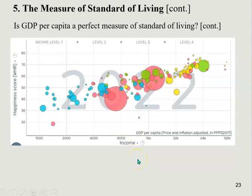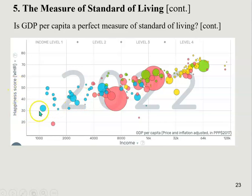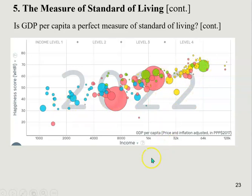There is one more Gapminder chart to share — the relationship between income measured by GDP per capita and happiness score. There are surveys out there asking people how happy they are in their life, and we find national-level happiness scores from these. As you can see, there is a positive correlation between GDP per capita and the happiness score. In other words, in higher income economies, people tend to say they are happier.